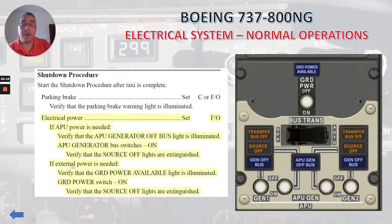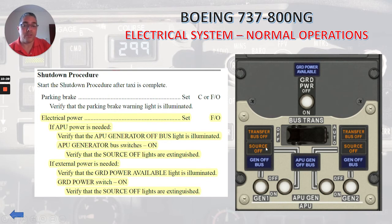If external power is needed, verify that the ground power available light is illuminated, then ground power switch to on. Verify that the source of lights are extinguished. With this, we finish part three of the electrical system.